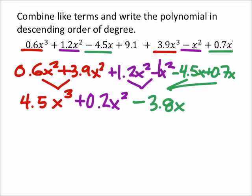Now I understand some of you guys actually don't need this step that I have here with these colors. But I don't know, maybe it's helping some of you guys. Here I have a plus 9.1. That's a degree of 0, and there are no other just constants in this expression or polynomial. So it just stays the same.